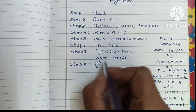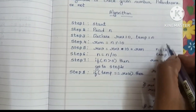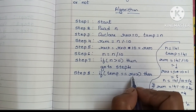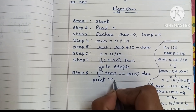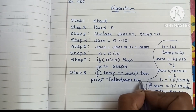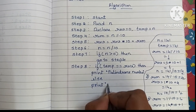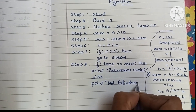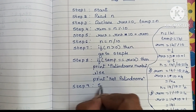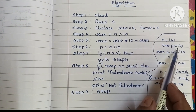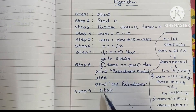Step 8: check if temp is equal to reverse. The temp value is 141 and the final reverse value is also 141 — they are equal, so we print 'it is a palindrome number'. Otherwise, we would print 'not palindrome'.